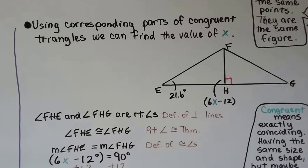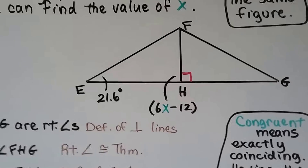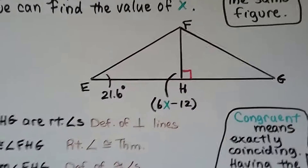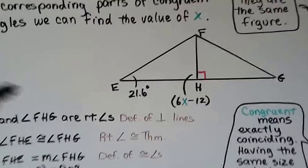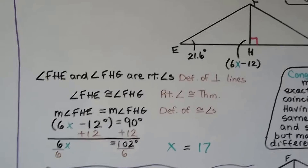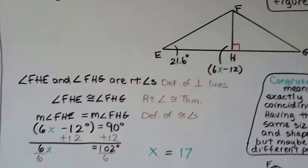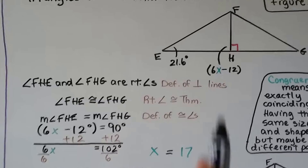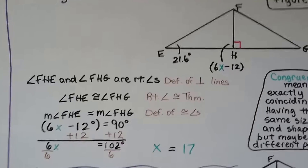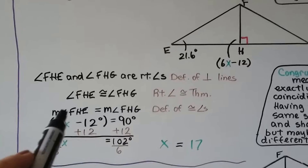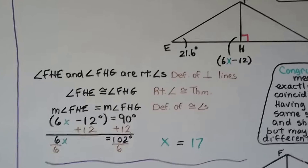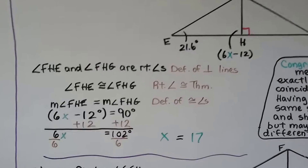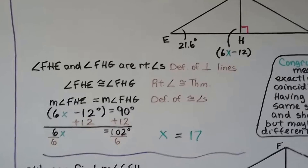Using corresponding parts of congruent triangles, we can find the value of X. There's a 90-degree angle, meaning that's perpendicular. If this is 90 degrees and that's perpendicular, then the other is also 90 degrees. So 6X − 12 = 90. Since angle FHE is congruent to angle FHG by the right angle congruence theorem, the measure of angle FHE equals the measure of angle FHG. We solve 6X − 12 = 90, getting X = 17.